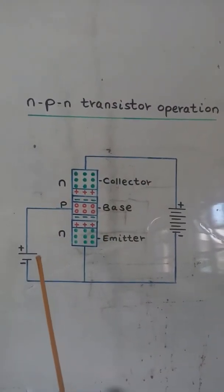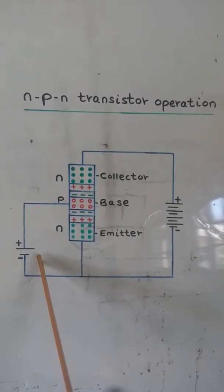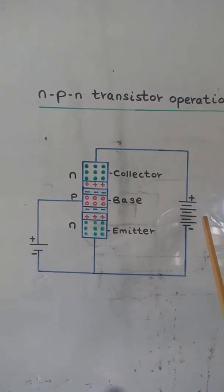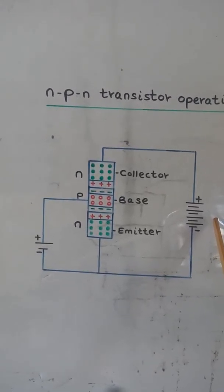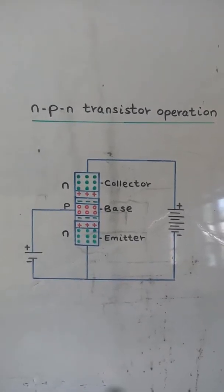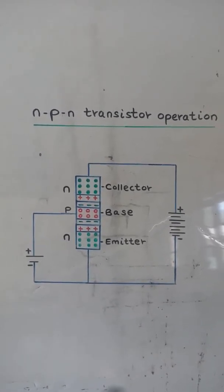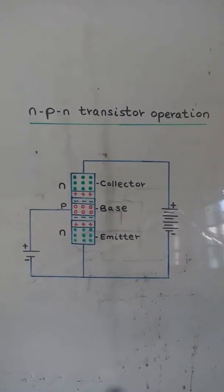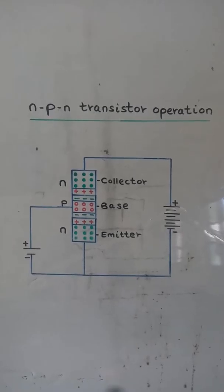The forward voltage applied to the base-emitter junction is less than the reverse voltage applied to the base-collector junction, so as to allow the flow of current from emitter to the collector. The majority charge carriers for an NPN transistor are electrons.